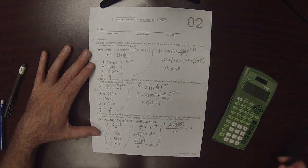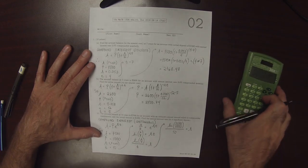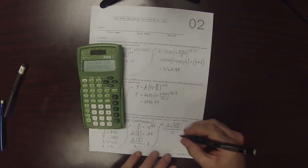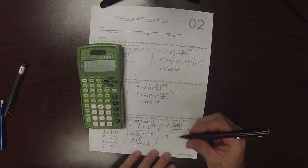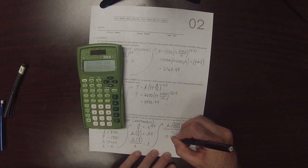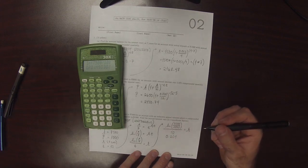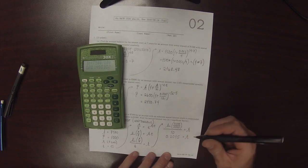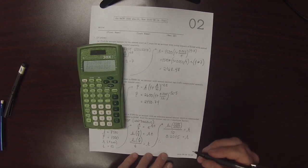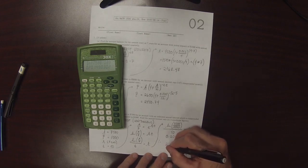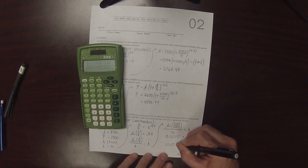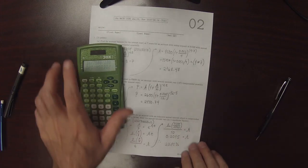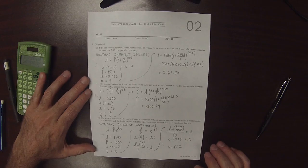To four significant figures, 0.2015 is R. And so the annual interest rate is 20.15%. And that's the solution to the exercise.